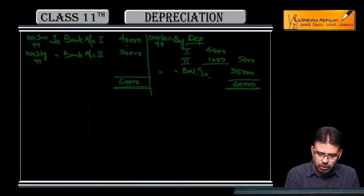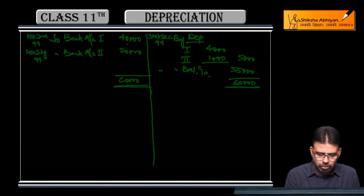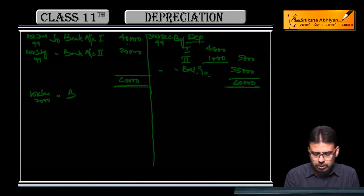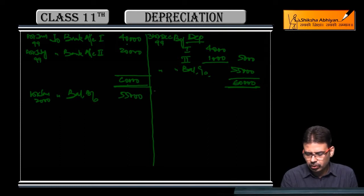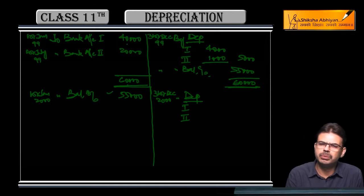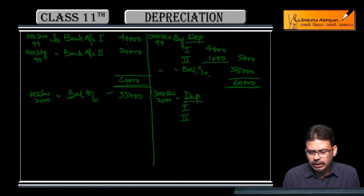In 2000 nothing happened, so in 2000 just apply normal depreciation. 1st January year 2000 to balance brought down 55,000. On 31st December 2000, depreciation can be applied separately or together. If applied together, it's 55,000 times 10 percent equals 5,500.